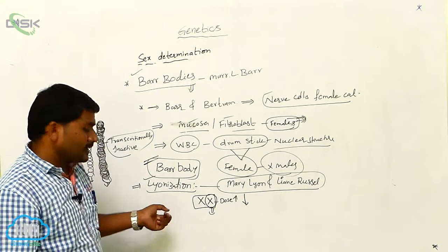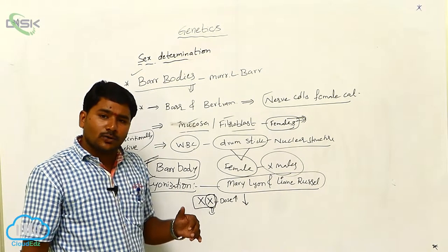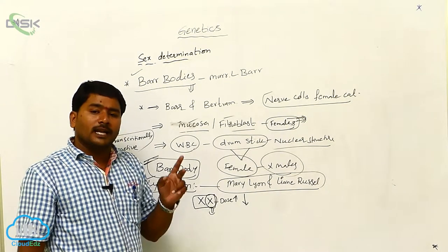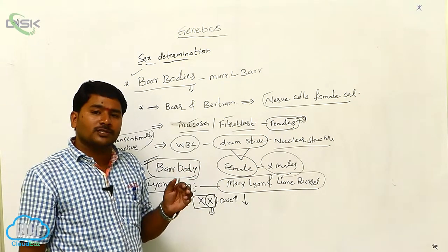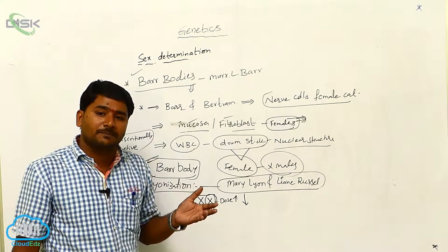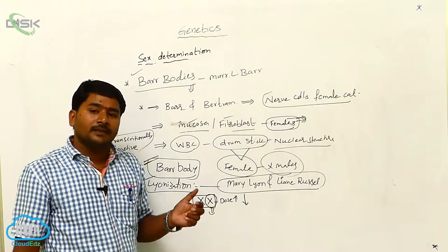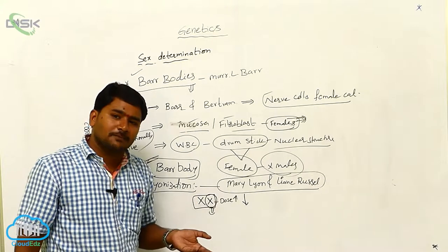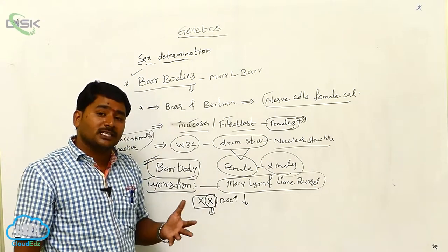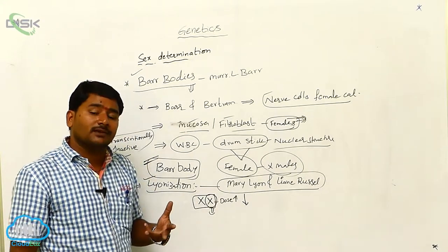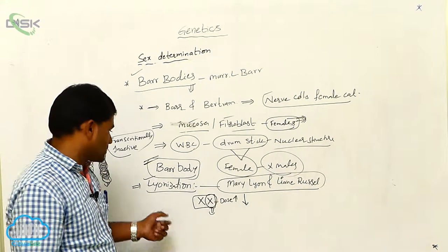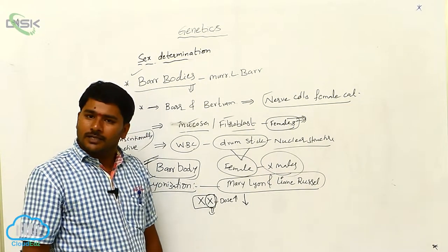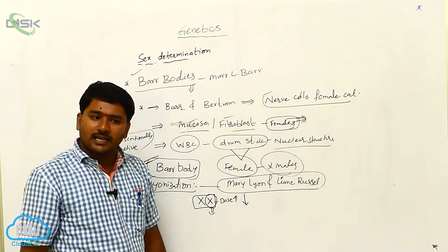In order to reduce the dose of gene products from the X chromosomes, one of the two X chromosomes undergoes inactivation through heterochromatinization and becomes transcriptionally inactive. This inactivation of one of the two X chromosomes is called lyonization.